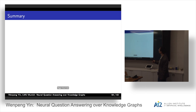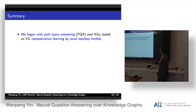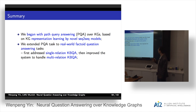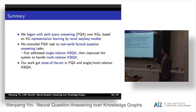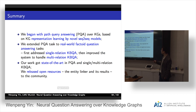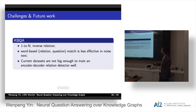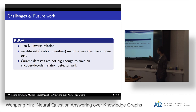Summary: we began with path query answering over knowledge graphs, using knowledge graph representation learning with sequence-to-sequence models. We extended PQA to real-world question answering, first addressing single-relation QA and then improving the system for multi-relation QA. We released open-source entity linker results. Challenges include: the one-to-N inverse relation problem in path QA; word-based matching between relations and questions being less effective in long text; and the current dataset not being large enough to train a good encoder-decoder relation detector.